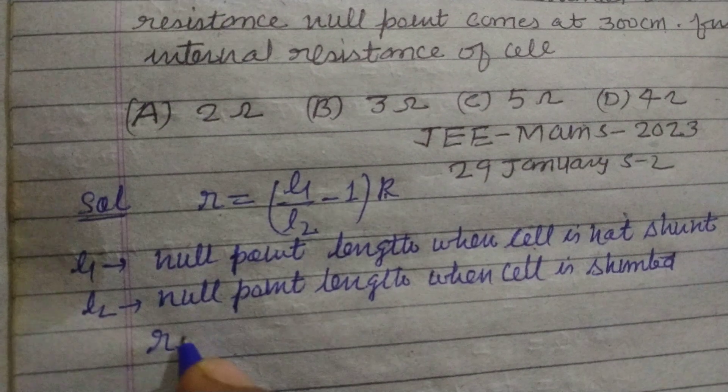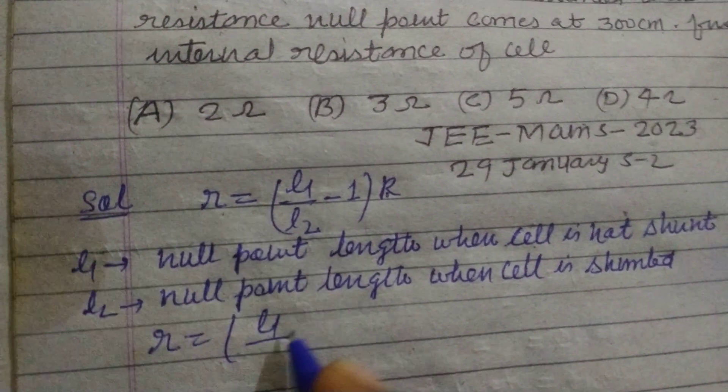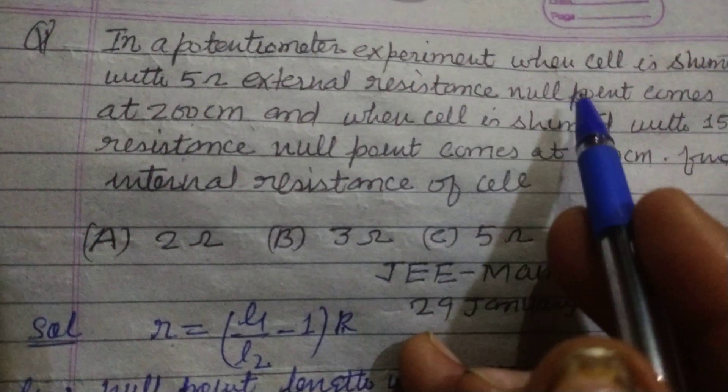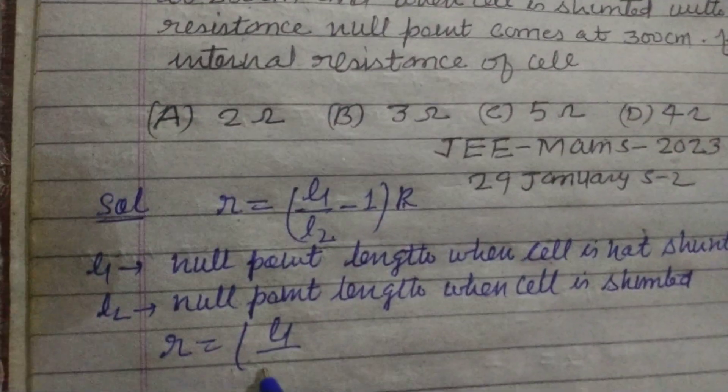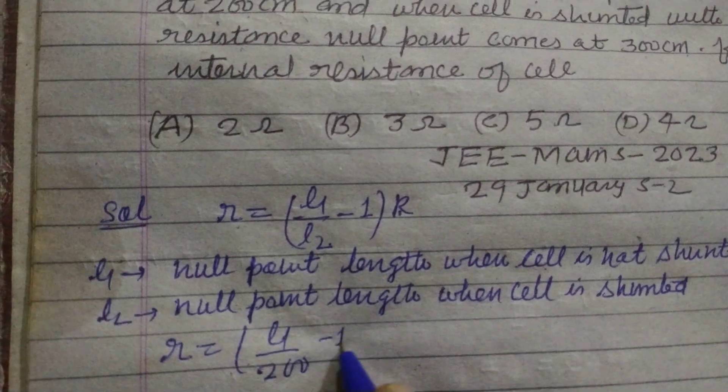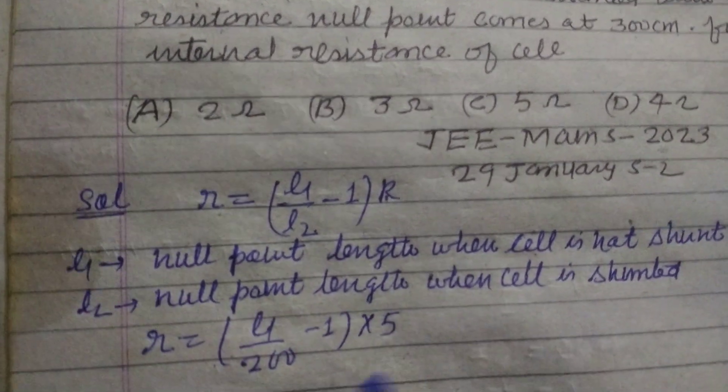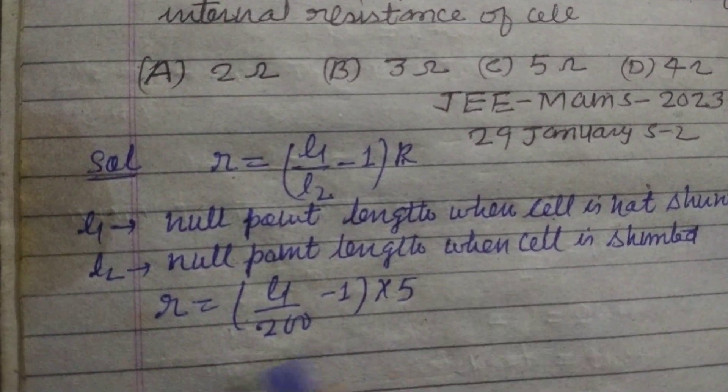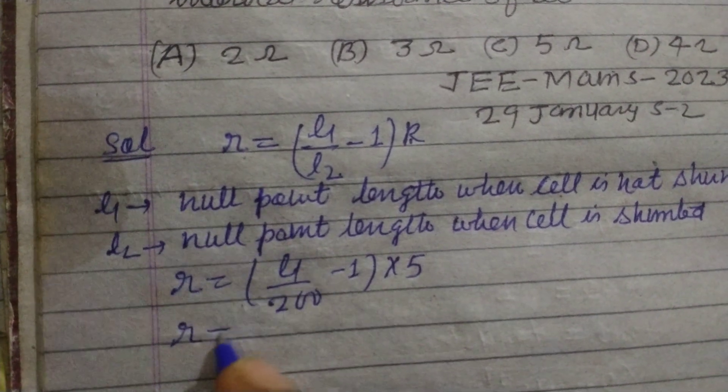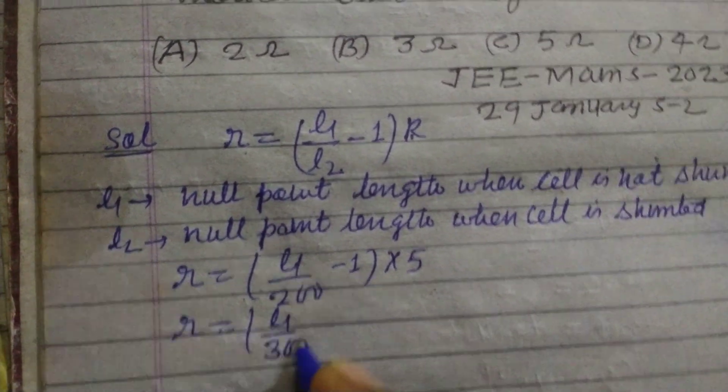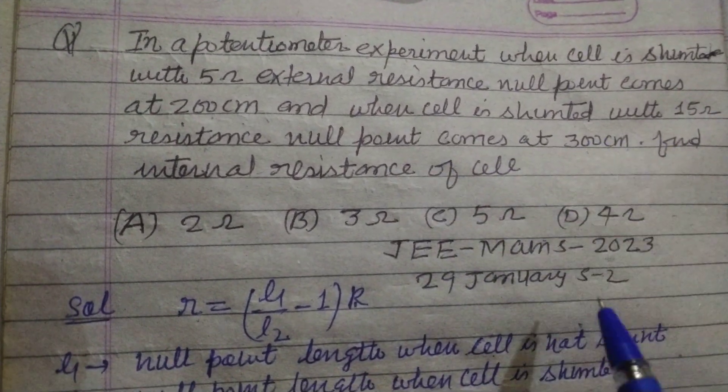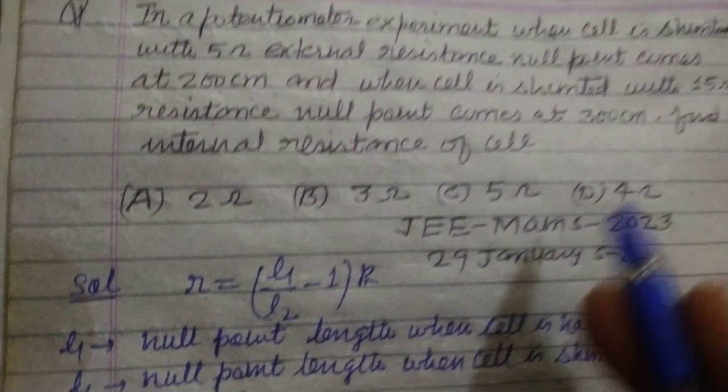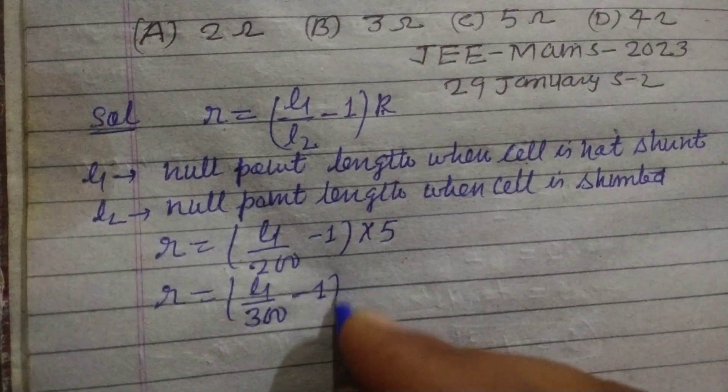So L2 is 200cm when external resistance of 5Ω is applied. In second case, L1 upon 300cm is the shunted length when 15Ω resistance is applied.